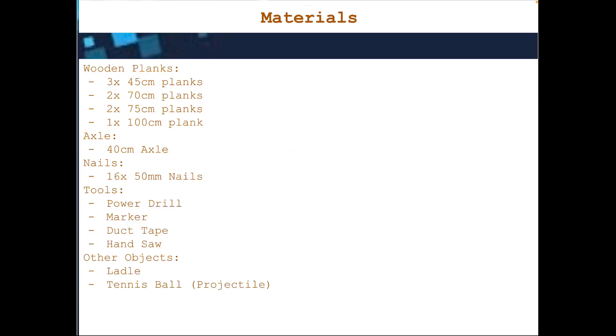To build the trebuchet, we will need a handful of materials. The most important pieces are the wooden planks, which you can find at a local Home Depot store. We will also need a 40 centimeter axle, 16 nails, and some other basic building tools.